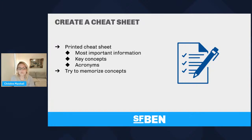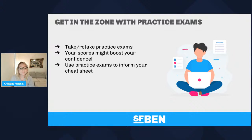Create a cheat sheet — great for read-write learners. A printed or written list of notes with the most important information, key concepts, maybe acronyms, things to help you remember the order of certain things. Try to memorise them, and it can be really reassuring to read through it in the half hour before the exam. Also get in the zone with practice exams. A week or two out, focus on using practice exams — take and retake them to see improvement on section-level scoring and boost your confidence.